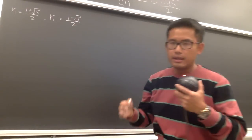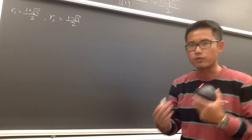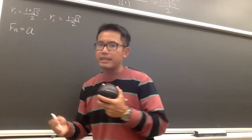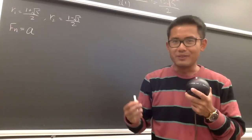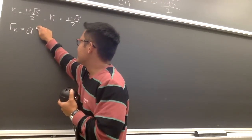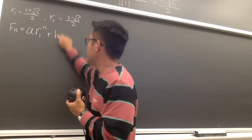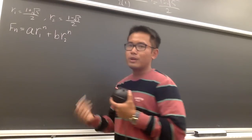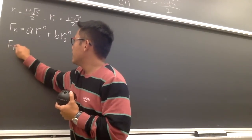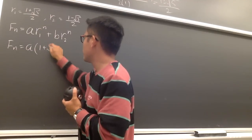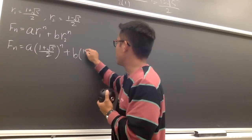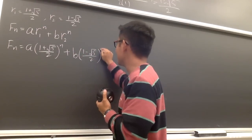Now this is how we put together the general formula. F(n) is going to be some constant a — just like c₁ and c₂ in differential equations — times r₁ to the nth power, plus b times r₂ to the nth power. So F(n) = a · ((1 + √5)/2)^n + b · ((1 − √5)/2)^n. We have two different r values, and we just put them together.